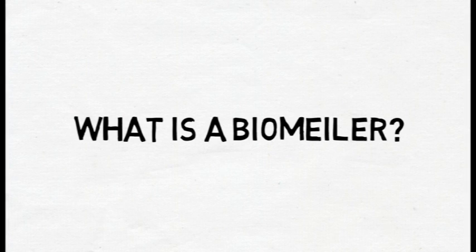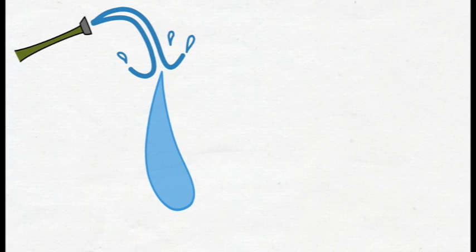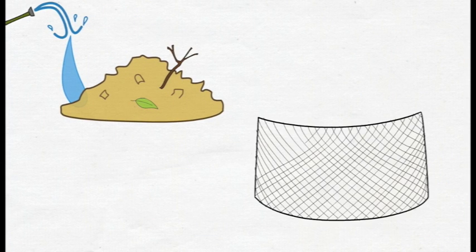What is a biomuller? Biomullers are very simple systems consisting of water and wood chips or other organic material. The material is contained by a wire fence.